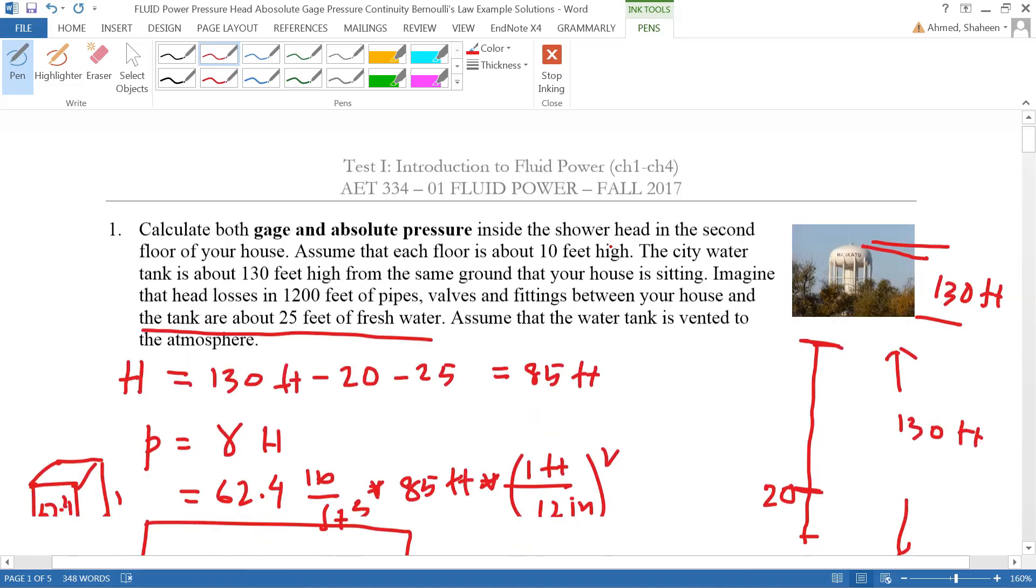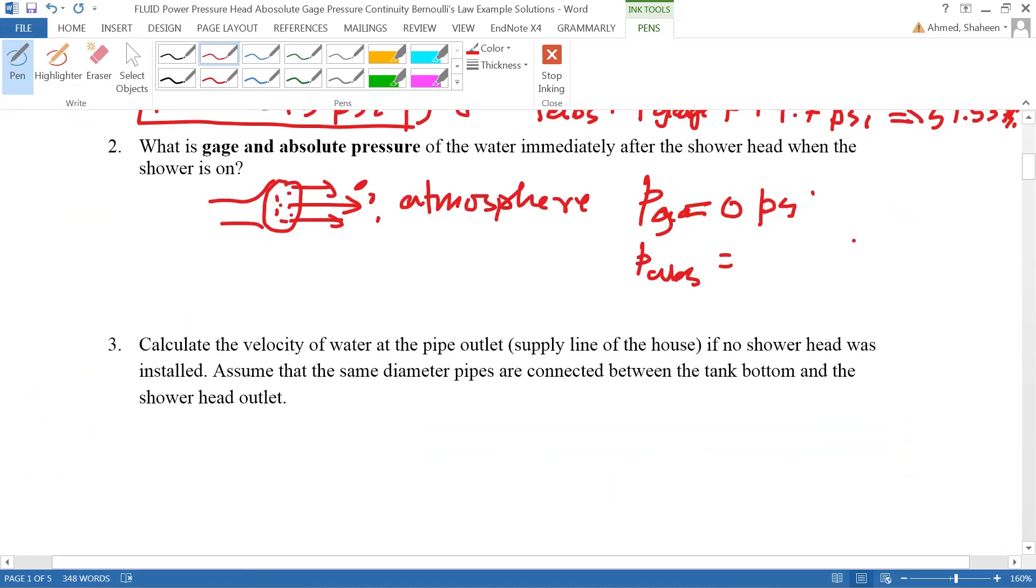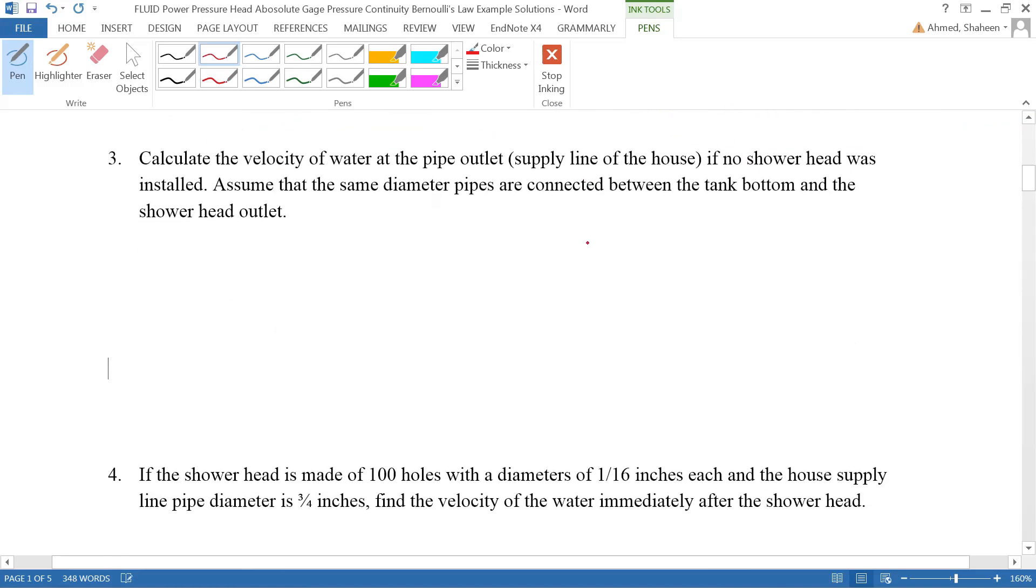In the earlier example, we have seen how to calculate pressure head, gas pressure, absolute pressure, and in this example we're going to see the energy concept. It says to calculate the velocity of the water at the pipe outlet supply line of the house if no shower head was installed. Just assume that the same diameter pipes are connected between the tank bottom and the shower head outlet.